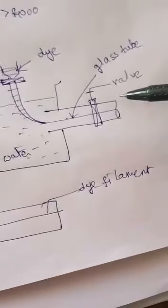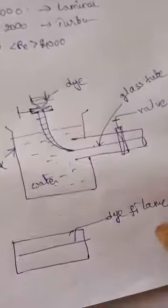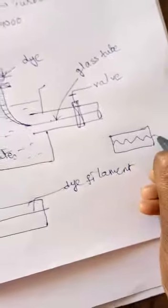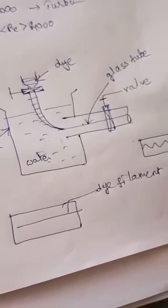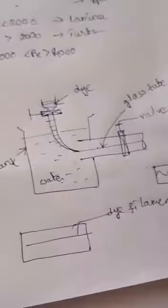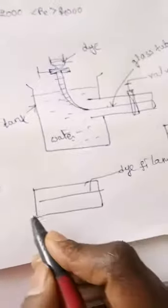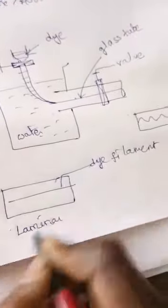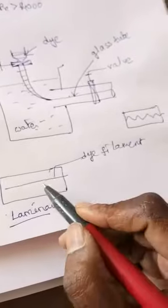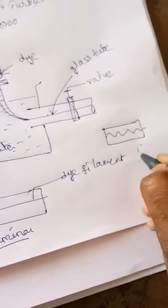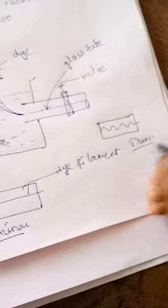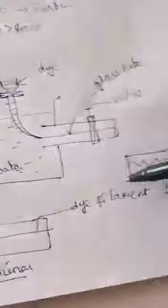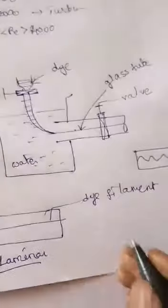With an increase in velocity, the dye filament is no longer a straight line but becomes a wavy one. If the dye filament is straight, that kind of flow is called laminar flow. If the dye filament changes from straight to wavy, that flow is called transition flow.